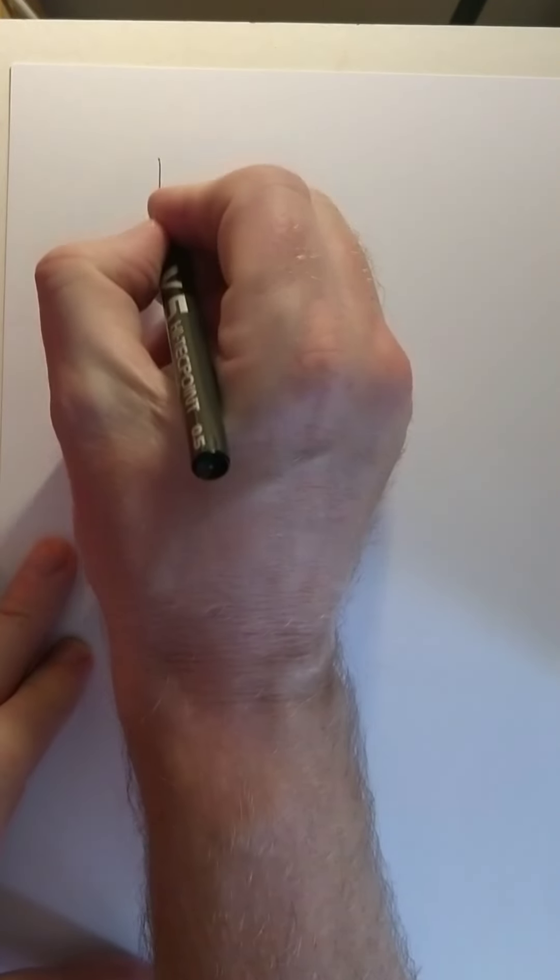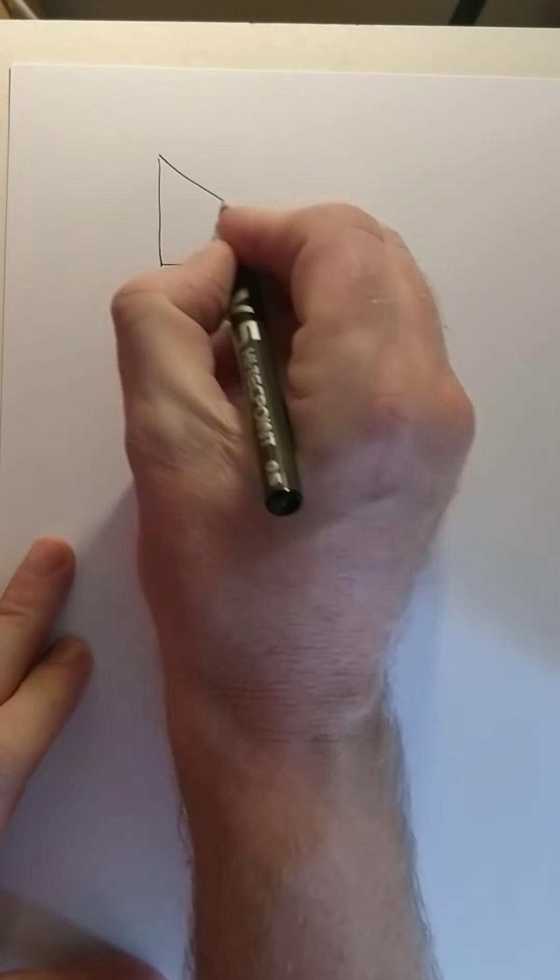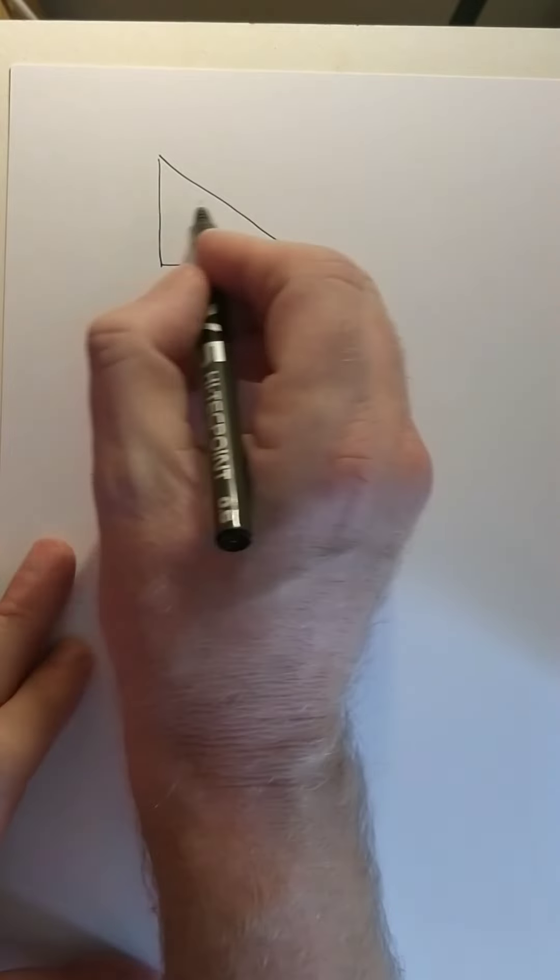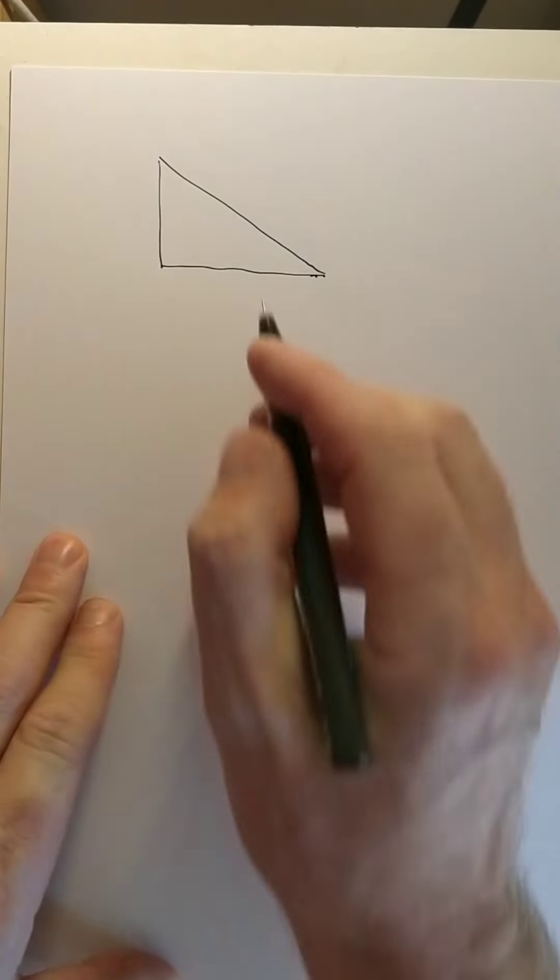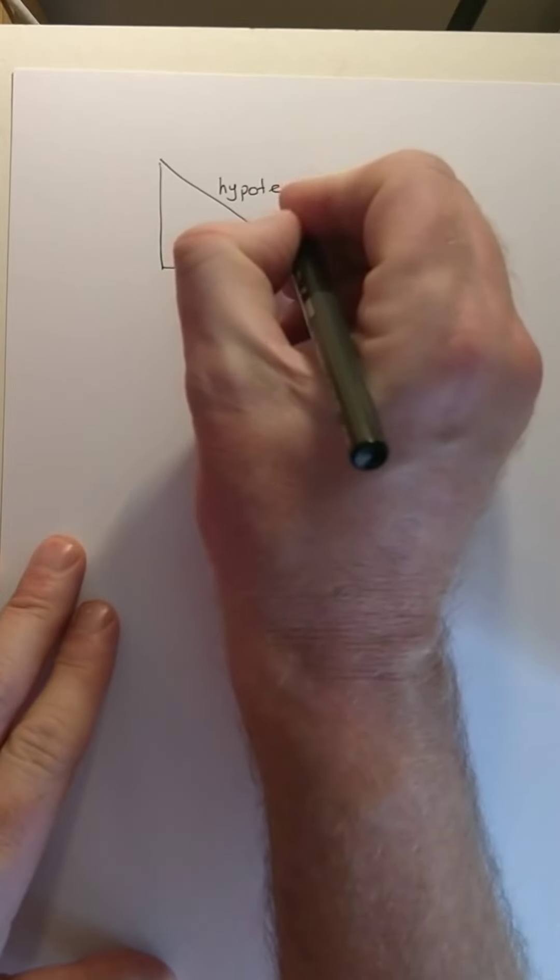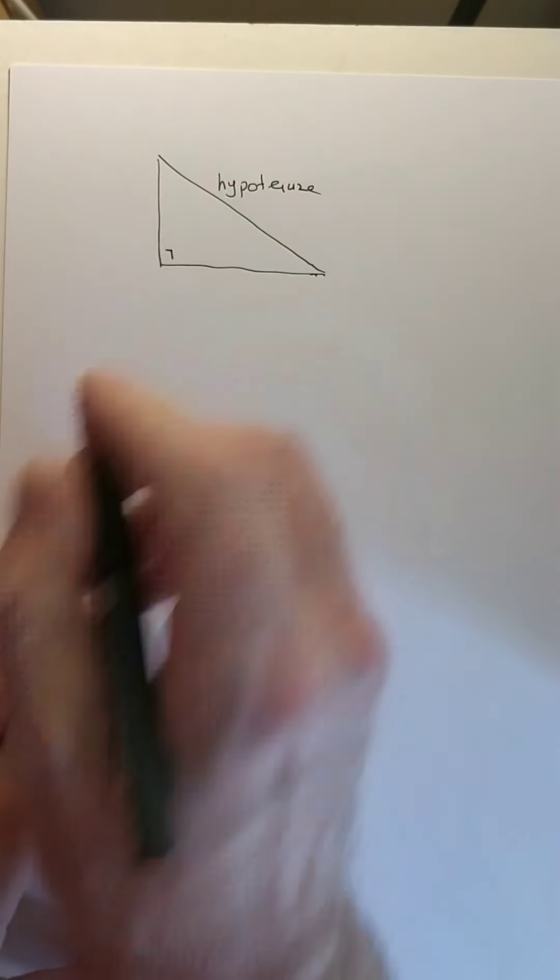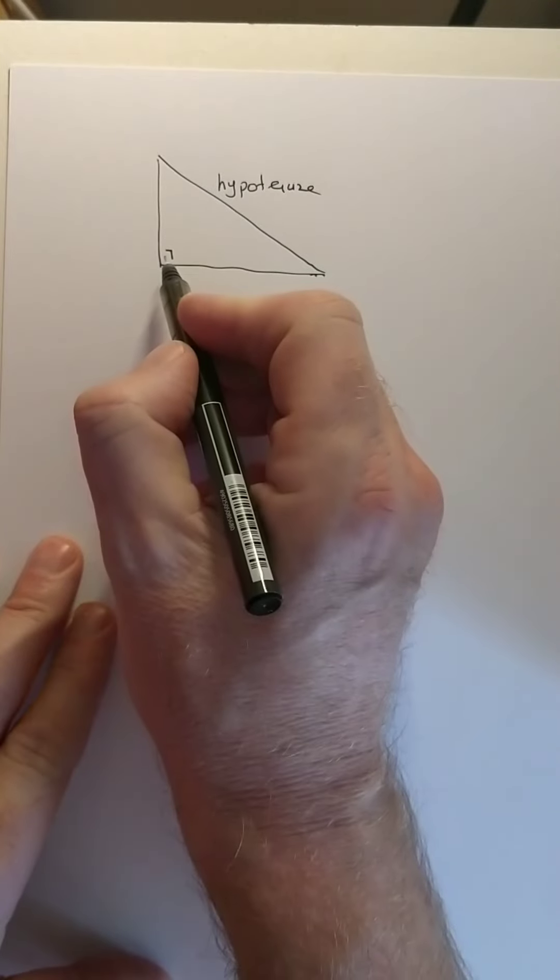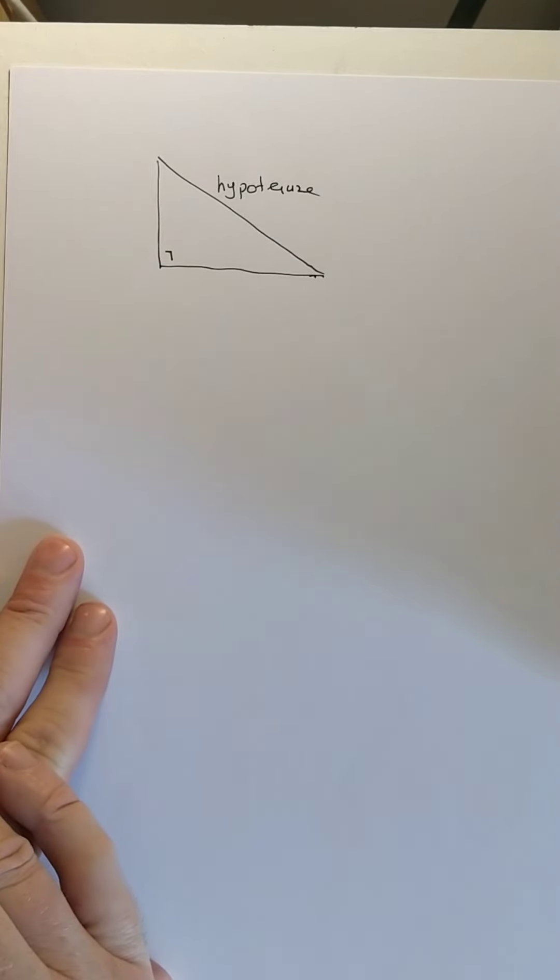SOHCAHTOA triangles. Remember the crucial point is that you're going to have a triangle. There are three sides in the triangle. Remember the longest side is always the hypotenuse, or H. And that's always opposite the right angle. It's the longest side, but if you're not sure which is the longest side, look for the one opposite the right angle.